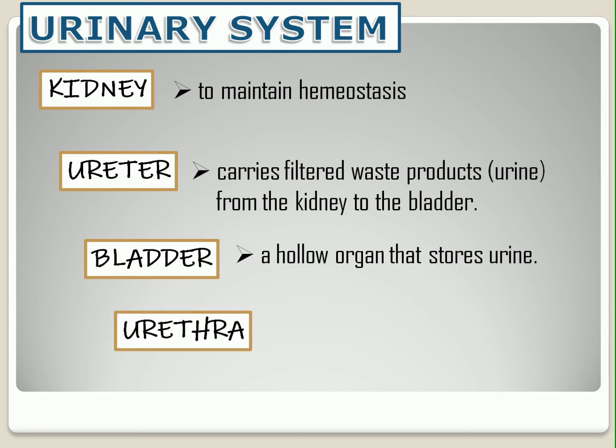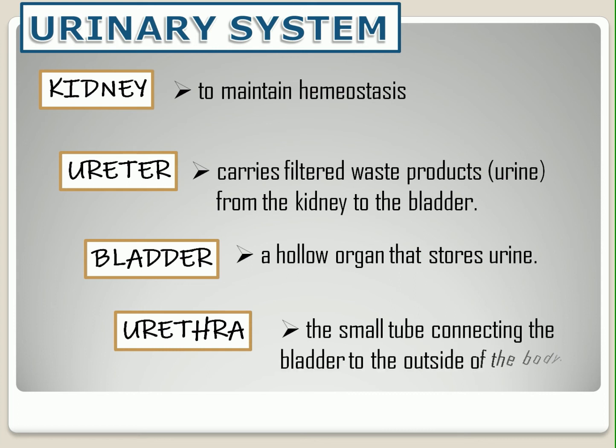Lastly, the urethra. It is the small tube connecting the bladder to the outside of the body. During urination, the brain will signal the bladder muscle to tighten, and then also signal the sphincter muscles to relax to let the urine exit the bladder through the urethra.